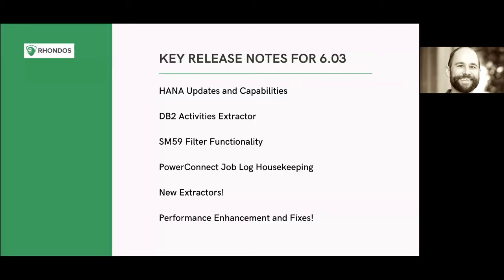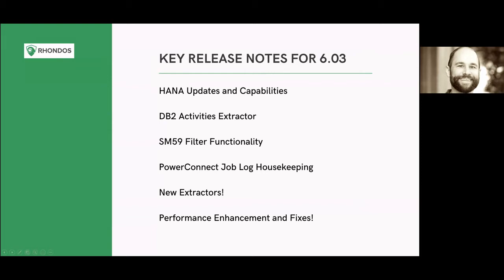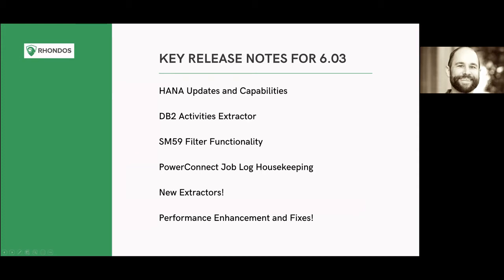I'm going to jump into the release notes for 6.03 here. I see there were a variety of chats coming through — Shelly, is there anything that requires my attention? Not at the moment. So, release notes for PowerConnect 6.03: we have quite a few different HANA extractors and capabilities we've added, as well as some functionality for DB2 that has been somewhat difficult to get in the past, especially if you're on older versions of SAP.